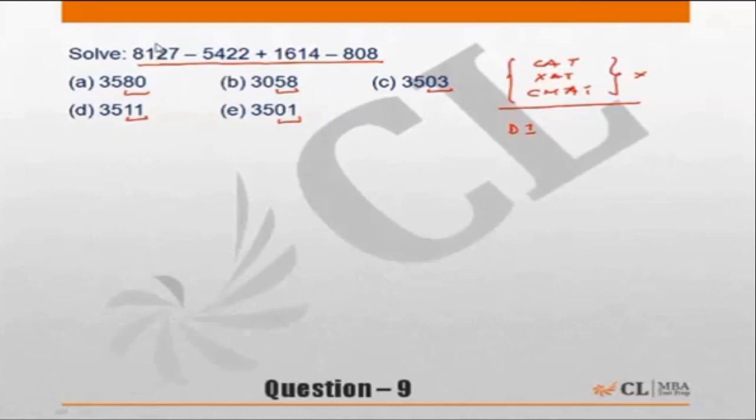So if I focus on the last two digits, this becomes 27 minus 22. 27 minus 22 is 5, 5 plus 14 is 19, 19 minus 8 is 11. 11 is not available as the last two digits in choice A, C, B, or E, and available only in D, so D becomes the correct answer.